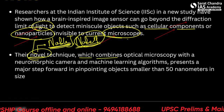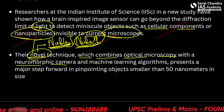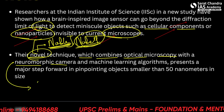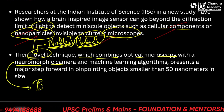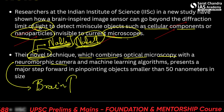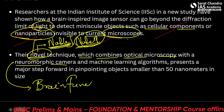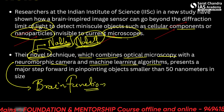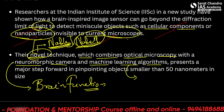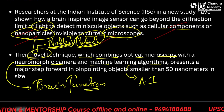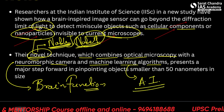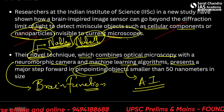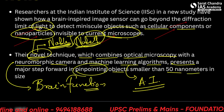The technique combines optical microscopy with the neuromorphic camera — neuromorphism meaning replication of brain function — and machine learning algorithms, which are simply artificial intelligence. This presents a major step forward in pinpointing objects smaller than 50 nanometers in size.